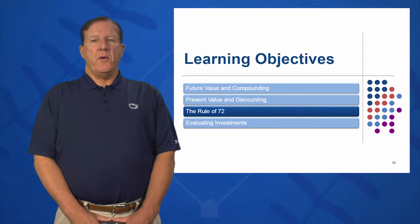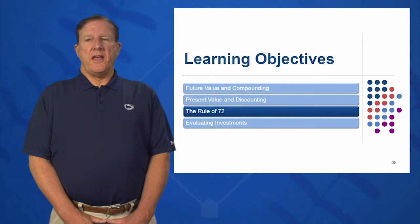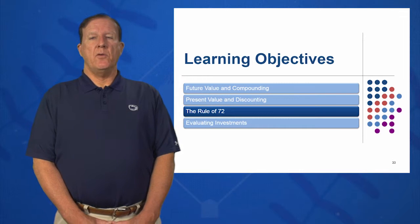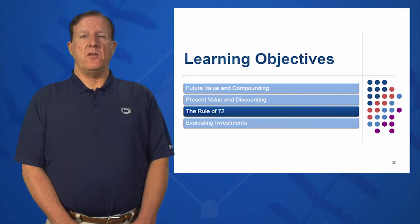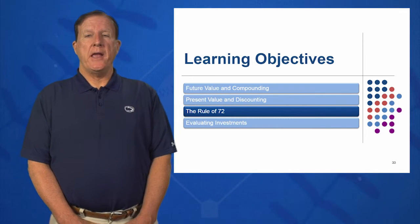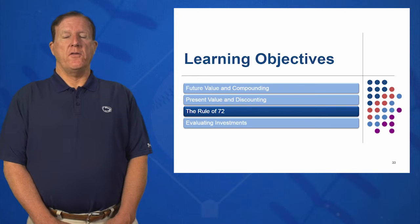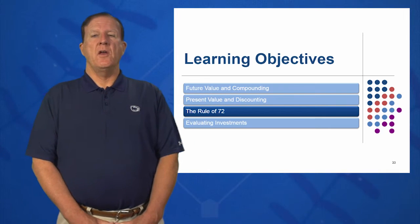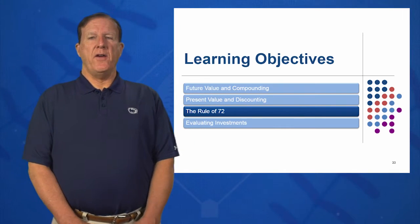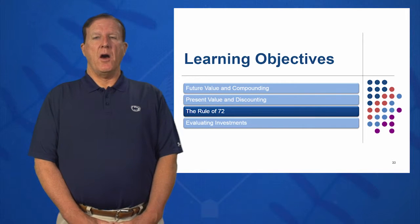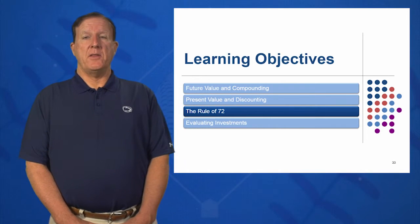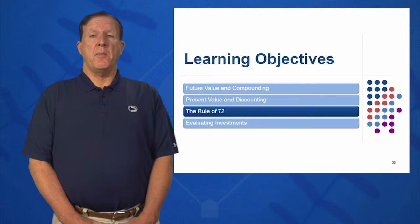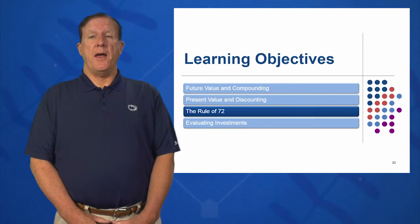In learning objective 3, we're going to investigate the rule of 72 — the time or rate it takes approximately to double your money. It is derived from the basic future value equation: future value equals present value times (1 + r) to the t, but it's a very simplistic model we can use to calculate the time it takes to double your money, or the rate at which it takes to double your money over a specific period of time.